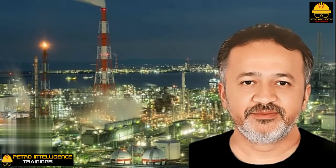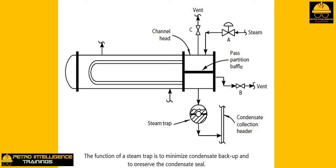The purpose of the steam trap, as shown in this picture, is twofold. First, to preserve the condensate seal — if steam blows through the outlet drain nozzle on the channel head, the rate of heat transfer will drop dramatically. Second, to minimize condensate backup — if condensate fills up tubes, those tubes are unavailable to condense steam, and the rate of heat transfer will drop in proportion to the tubes filled with water. The steam trap is designed to pass liquids (H₂O) and retard the passage of vapor (steam). There are two problems with the control scheme shown in this picture.